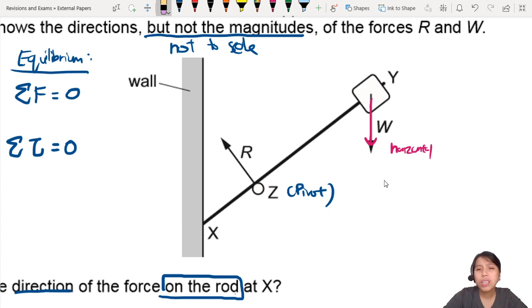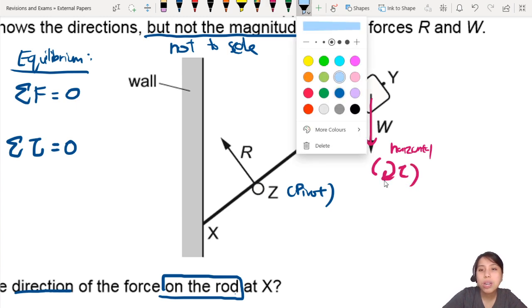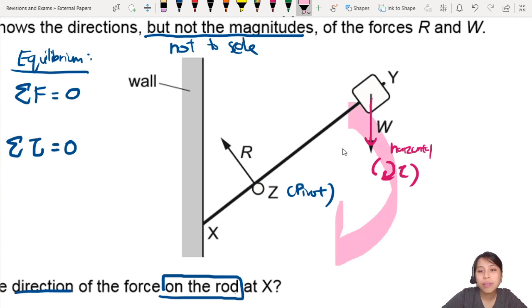If you take a look at this, what do we have already? W is going to contribute a clockwise moment. It's going to cause the whole rod to turn like this. Really big arrow. So that is a clockwise moment thanks to W on the end.